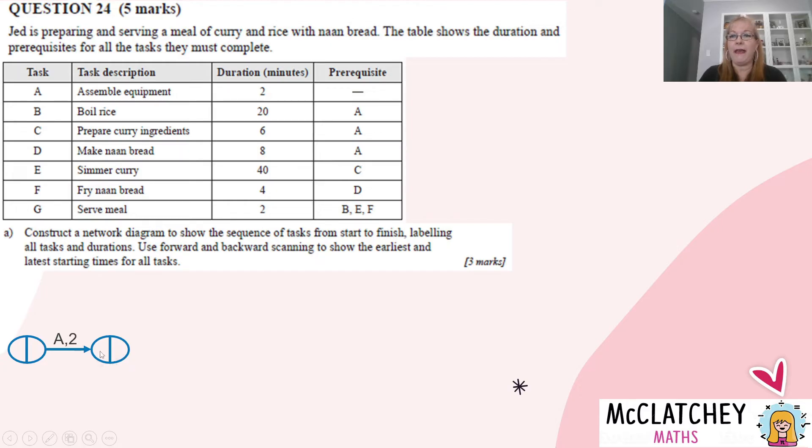Now, out of this bubble, we're going to have three tasks coming out, B, C, and D, because they all come immediately after task A. So there's B coming out there, it lasts for 20 minutes. There's C coming out there, lasting for six minutes, and D coming out there, lasting for eight minutes. And all of these activities now are prerequisites for new activities.